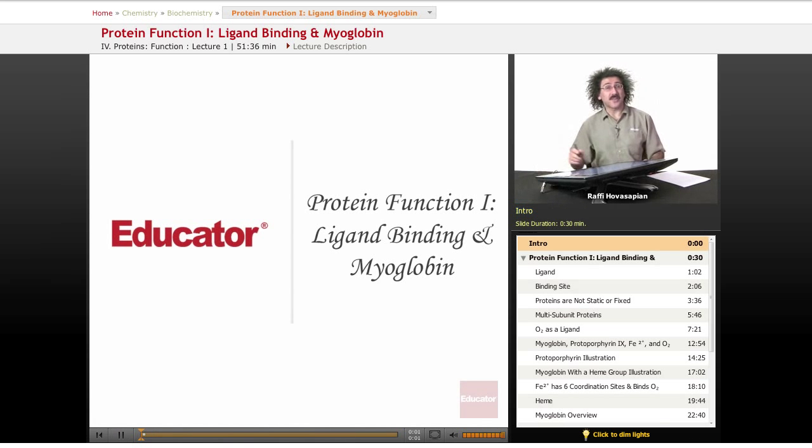Hello and welcome back to Educator.com and welcome back to Biochemistry. So today we're going to start our discussion of protein function. We've already taken a look at amino acids and primary structure, secondary structure, tertiary structure, and quaternary structure. Now we're going to talk about protein function. In particular, we're going to be talking about ligand binding and we're going to be spending a fair amount of time talking about this protein called myoglobin.